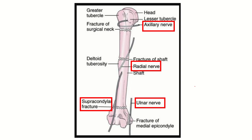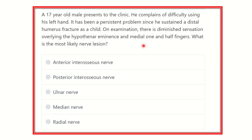Welcome to another question and answer session for the MRS exam. A 17-year-old male presents to the clinic complaining of difficulty using his left hand. It has been a persistent problem since he sustained a distal humerus fracture. On examination, there is diminished sensation over the hypothenar eminence and medial one and a half fingers. What is the most likely nerve lesion?